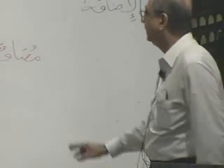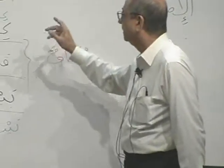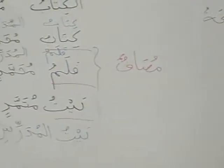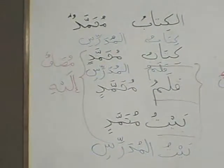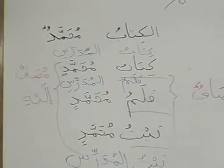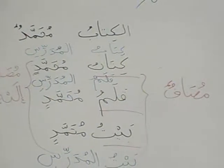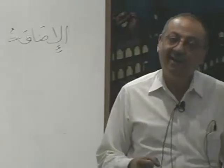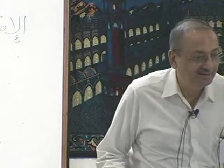When you will see the examples in front of you, you will inshallah figure out. The most important thing to bear in mind is the Mudaf — the thing possessed or thing owned. Being possessed will never have Al, and it will never have Tanwin. That's all.